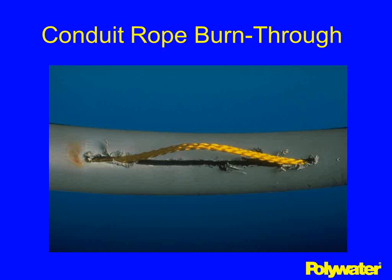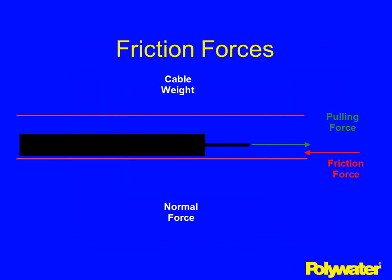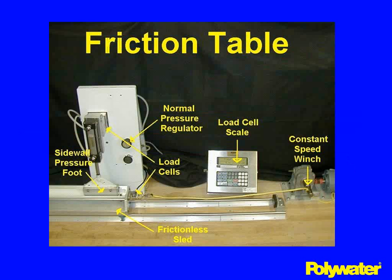Let's talk about coefficients of friction — what is the definition and how is it measured? Looking at frictional forces: if a cable weighs 10 pounds per foot, there is an equal normal force pushing up on the cable. When we pull the cable, the pulling force tries to overcome the frictional force — the difference between the cable jacket and the conduit surface. By general laws of physics, if the cable weighs 10 pounds per foot and it took 5 pounds to move it across the conduit, the coefficient of friction would be 0.5.